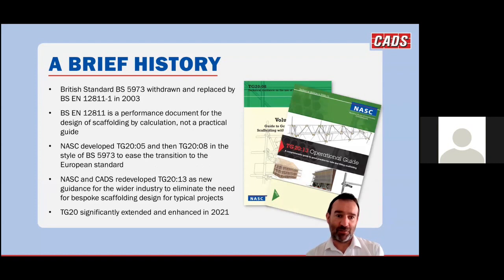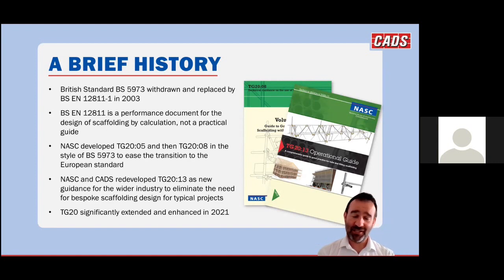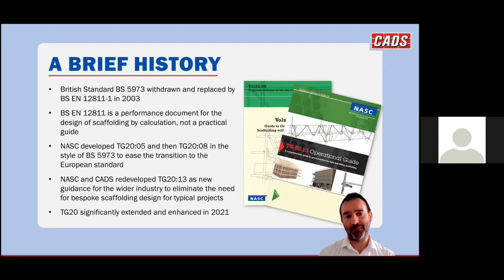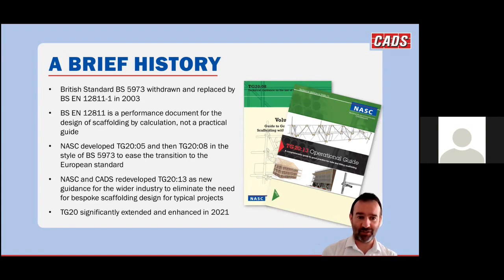TG20 really started with the withdrawal of BS 5973 back in 2003. The British Standard was replaced with Eurocode EN 12811, and anyone who's seen the two documents will see they're quite different. The British Standard was quite a practical document with lots of guidance for practical applications of scaffolding, whereas 12811 is very much a document about the analysis and design of scaffolding by calculation. The withdrawal of the British Standard left a bit of a vacuum which TG20 sought to fill.